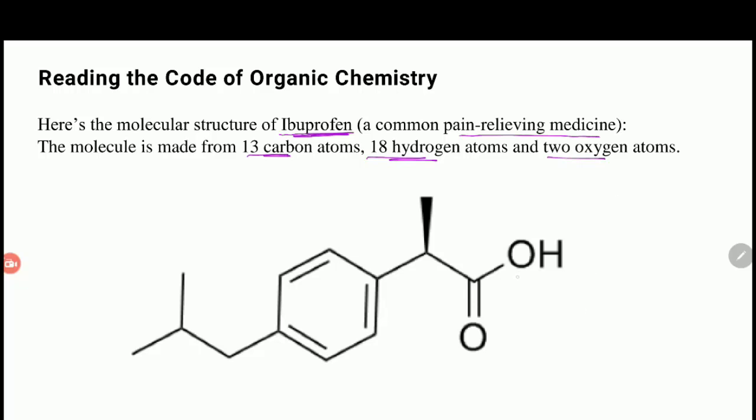The two oxygens are visible, but the 13 carbons are completely invisible. So when you look at that structure, every vertex, every corner is a carbon. So here's a carbon...